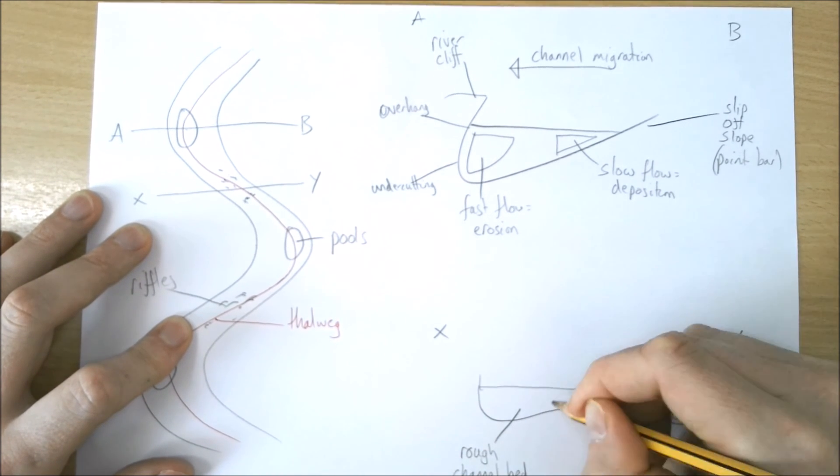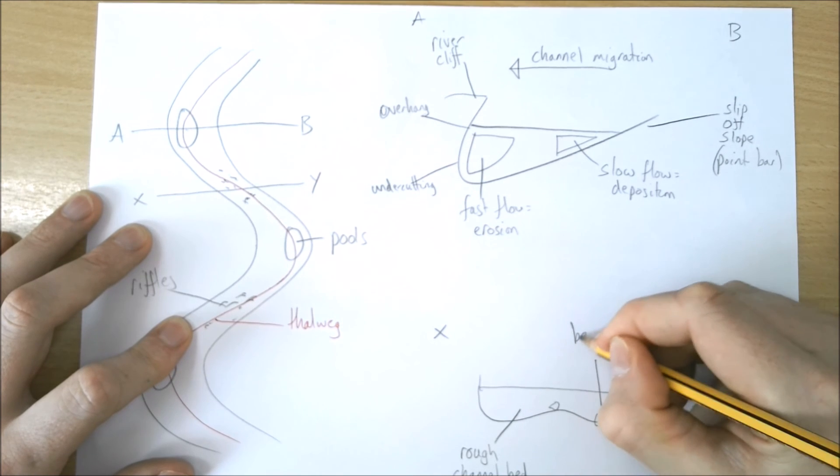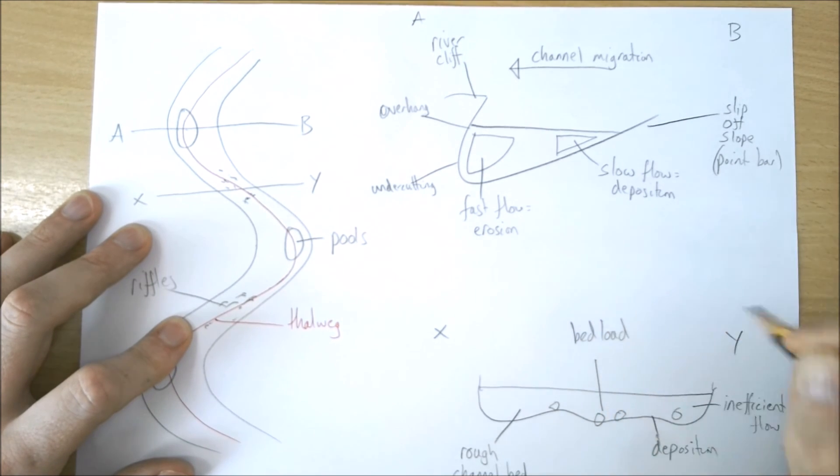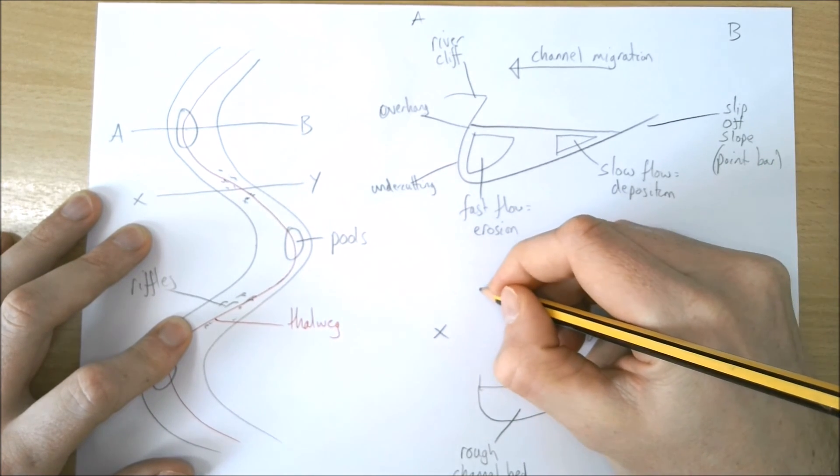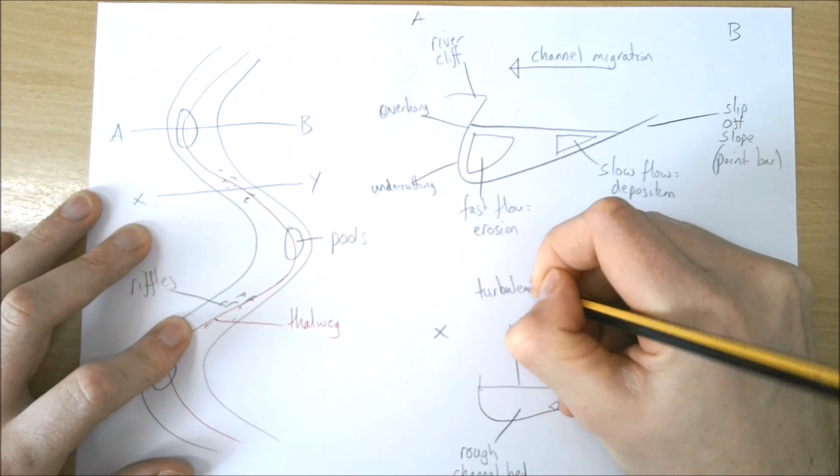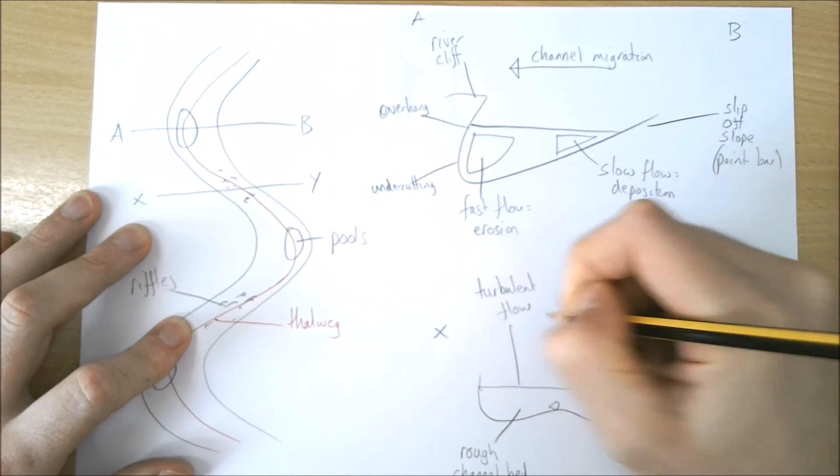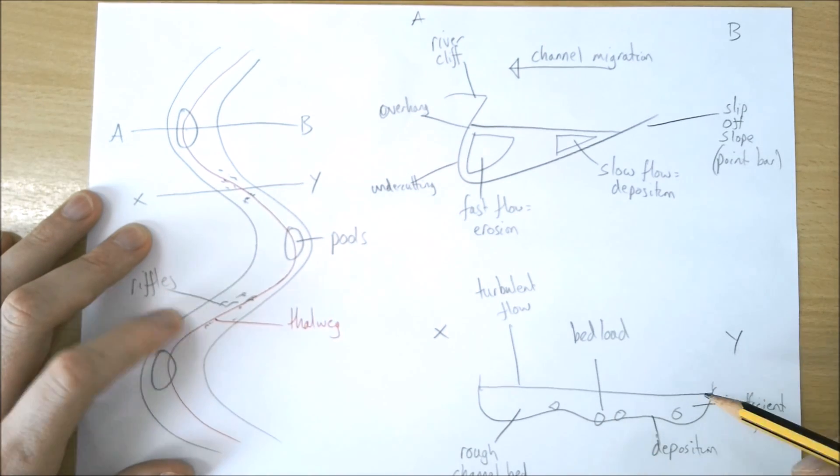We can add in 'bed load,' and this might create some turbulent flow, much like we see in the upper course.